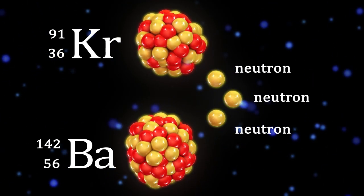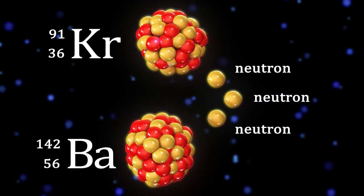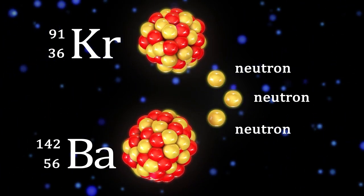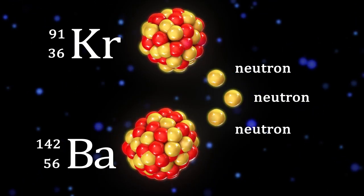U-236 immediately splits into two lighter elements, such as Krypton-91 and Barium-142. The fission event also releases three neutrons and energy.